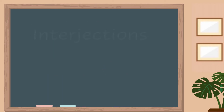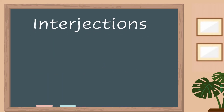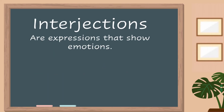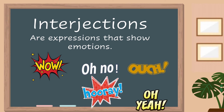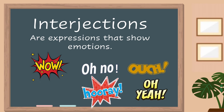Interjections are expressions that show emotions and are usually followed by an exclamation mark. Some examples of interjections are the following: Wow! Oh no! Ouch! Hooray! Oh yeah! Help!